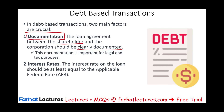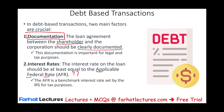The second requirement is a stated interest rate. The interest rate on the loan should be at least equal to the AFR — the Applicable Federal Rate — which is published by the IRS on a monthly basis. When you have a loan, you have to set an interest rate, and that interest rate should be at least based on the AFR. What happens if it's below the AFR? We're going to have to deal with imputed interest. The AFR is the benchmark interest rate set by the IRS for tax purposes.